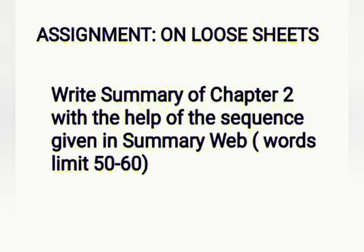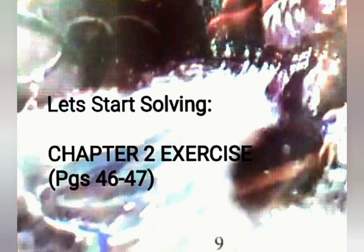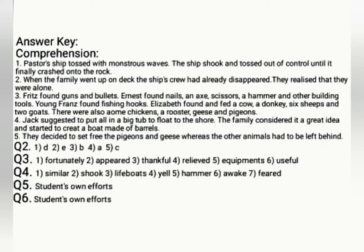Your assignment and homework is to write a summary of chapter 2 with the help of the sequence given in a summary web. I have already provided the web. The word limit should be 50 to 60 words. Now let's start solving the exercise. There are five to six questions in your exercise. First, try to solve the exercise by yourself using your books. If you feel any difficulty, you can take help from this guide, this comprehension. I have solved the questions for you and you have to write comprehension questions 1 to 5 on your notebooks, your literature copies. Thank you.